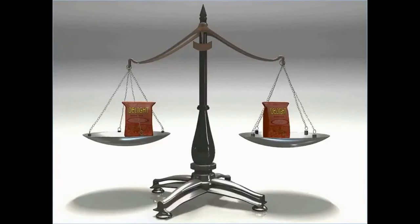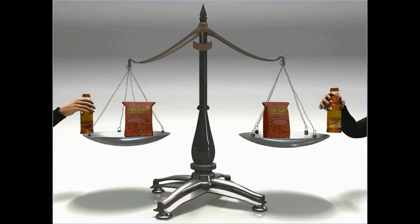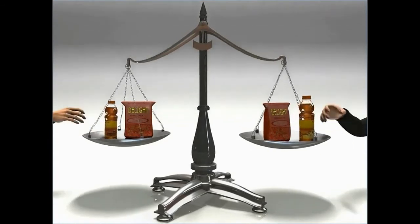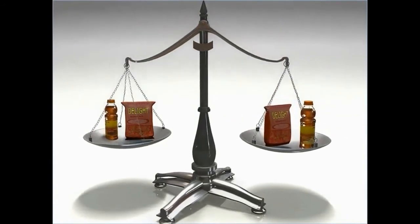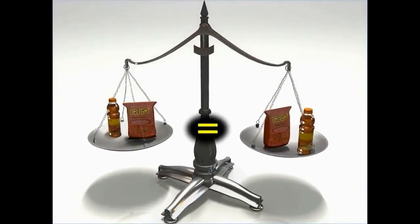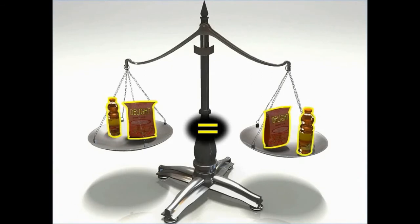Consider two bags of equal weight. If bottles of the same weight are added to both the bags, the beam remains balanced, showing that the weight is still equal on both sides. This helps to understand Euclid's next axiom: if equals are added to equals, then the wholes are also equal.